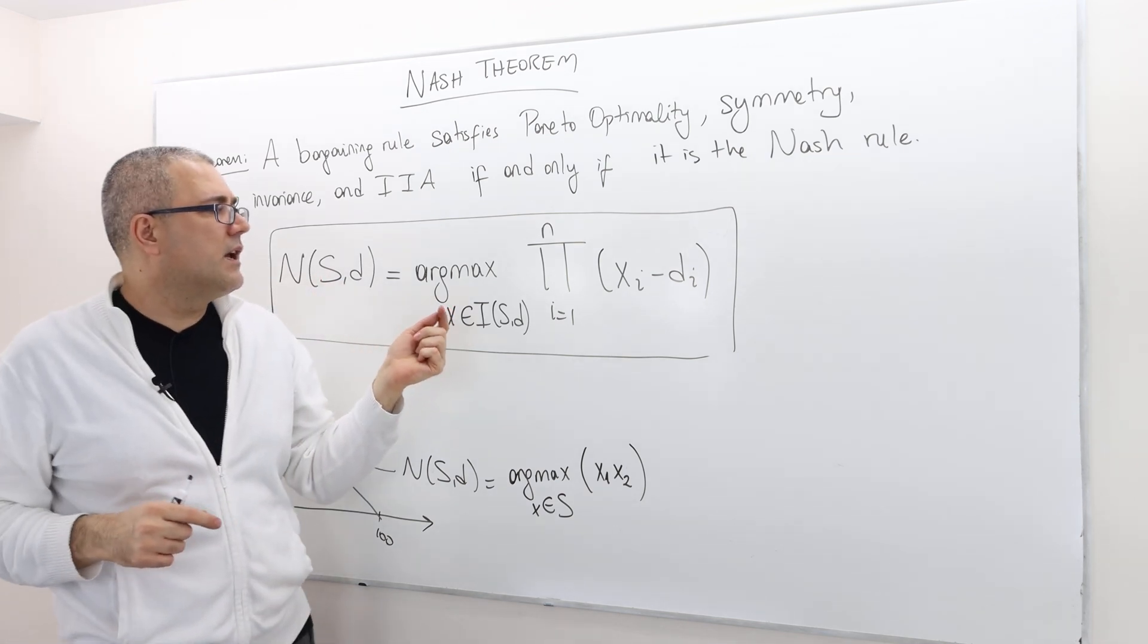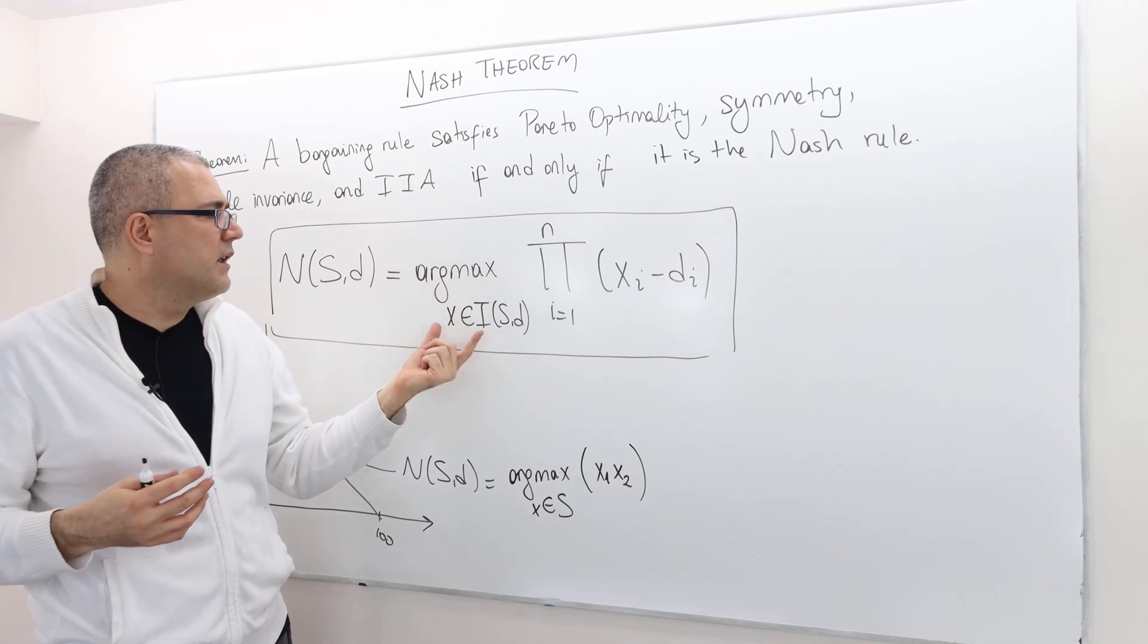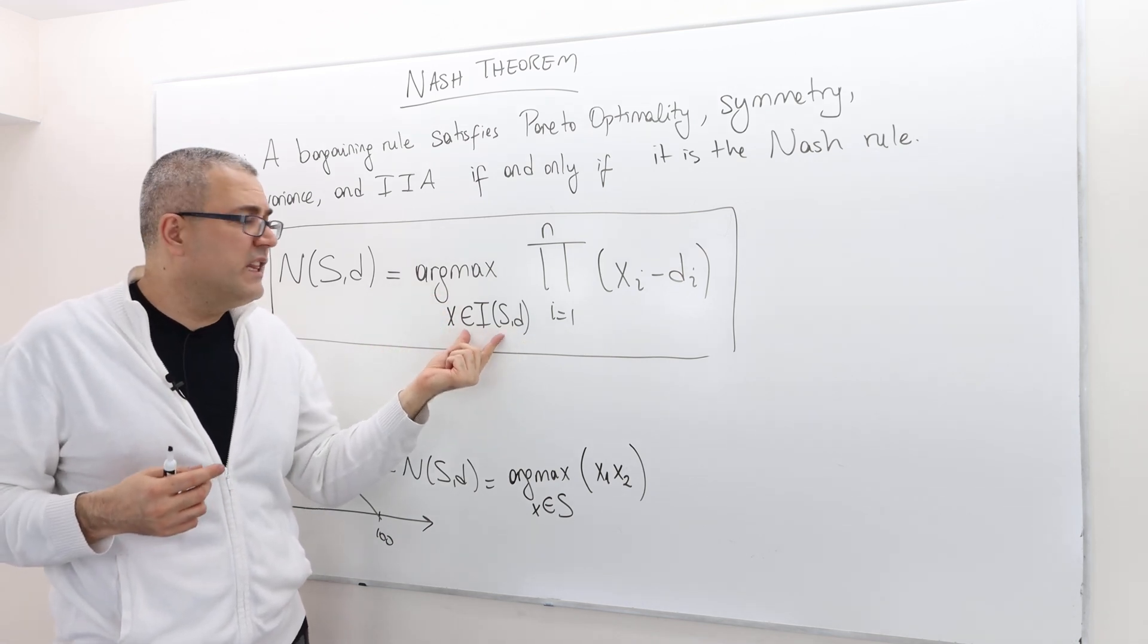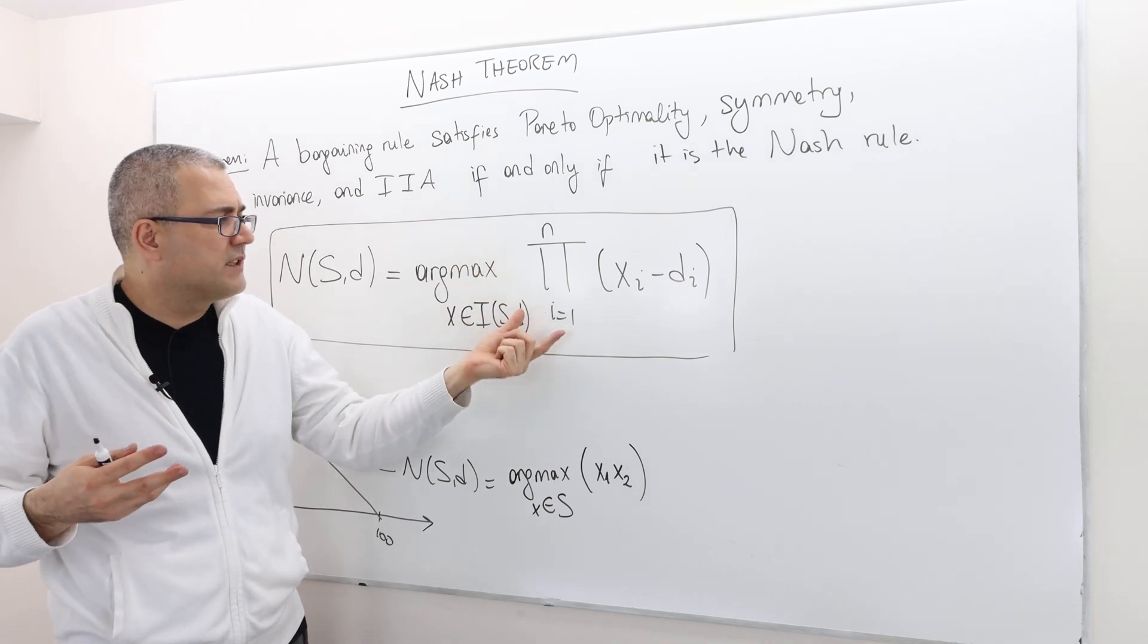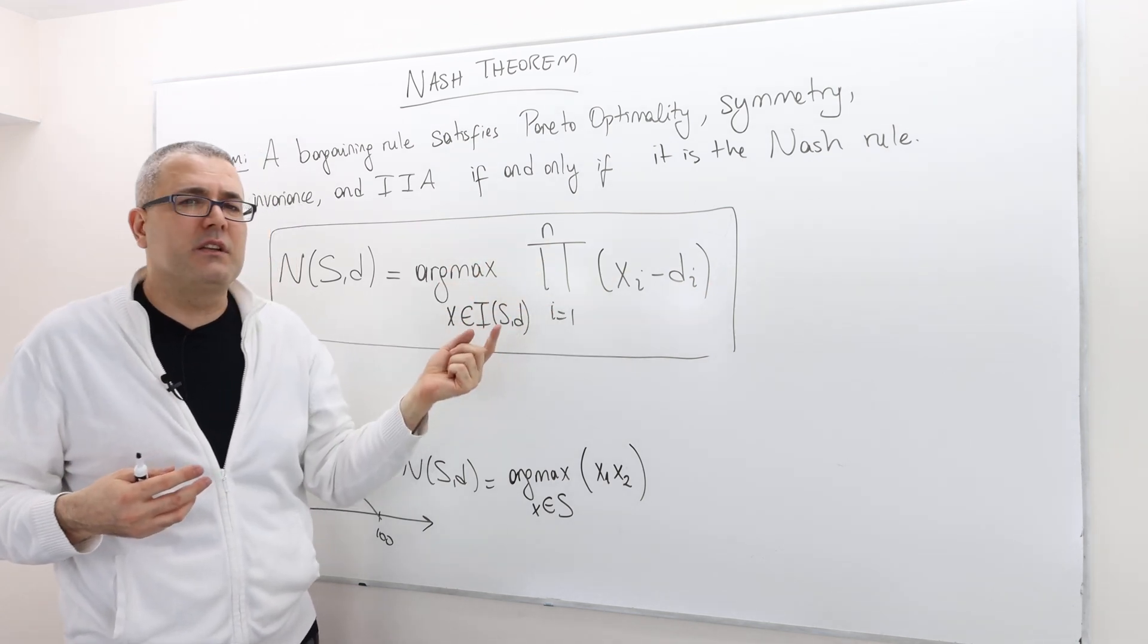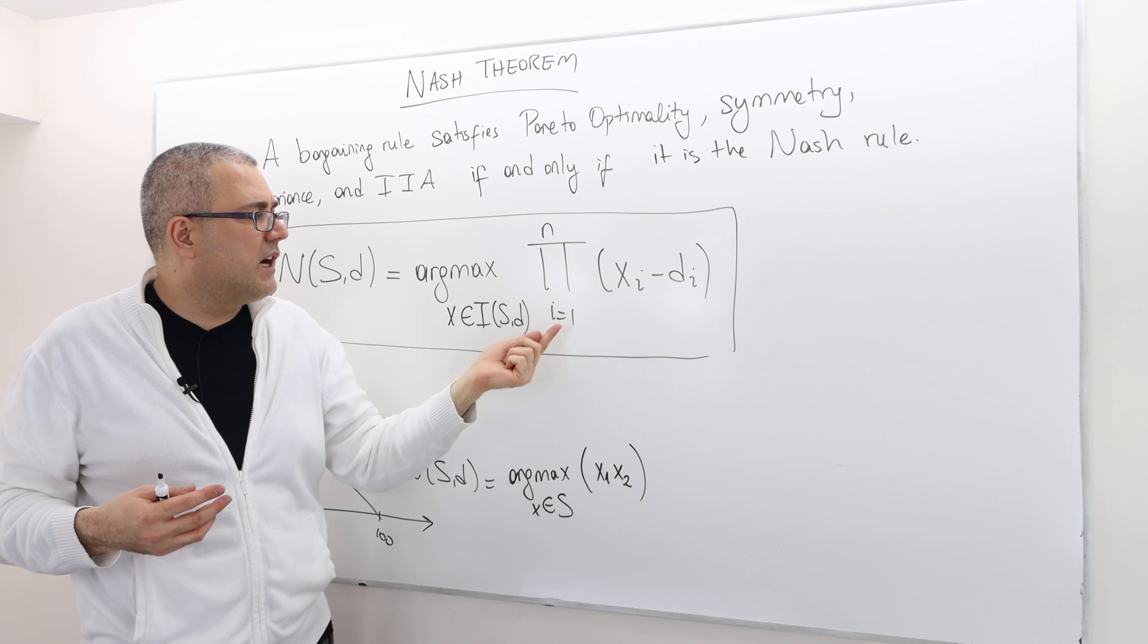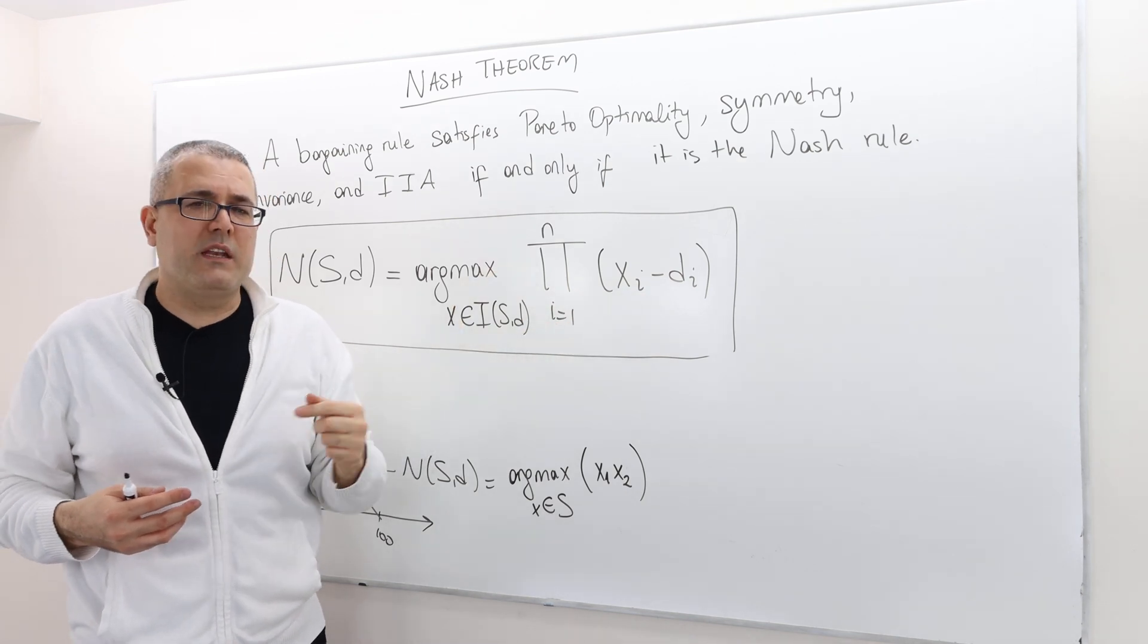it basically finds the payoff vector, individually rational payoff vector, which maximizes this multiplication. X_i minus d_i, where i from 1 to N.